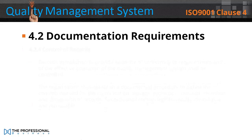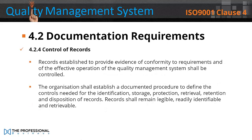4.2.4 Control of Records. Records established to provide evidence of conformity to requirements and of the effective operation of the quality management system shall be controlled. The organisation shall establish a documented procedure to define the controls needed for the identification, storage, protection, retrieval, retention and disposition of records. Records shall remain legible, readily identifiable and retrievable.